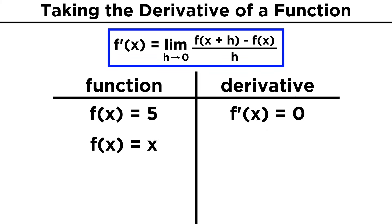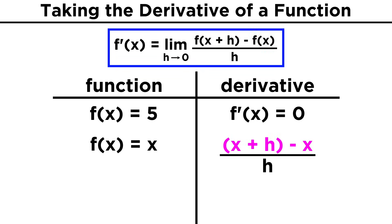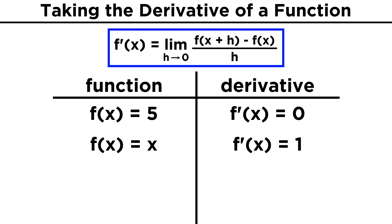Now let's try the function f of x equals x. If we try to find the derivative of this, for f of x plus h, we get x plus h, and for f of x, we get x. So x plus h minus x means the x's cancel, which gives us h, and h over h is one. So the derivative of x is one.